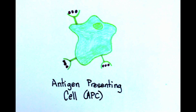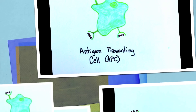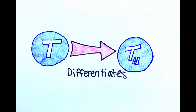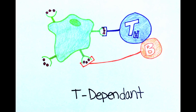These cell fragments are then displayed on the surface of the phagocyte as B-type antigens. The phagocyte is now referred to as an antigen-presenting cell, or APC. The APC secretes interleukin-1, a cytokine that stimulates the production of B and T lymphocytes. T lymphocytes differentiate into T helper cells, which bind to the APC and allow B cells to be activated. This is referred to as T-dependent humoral immune response.